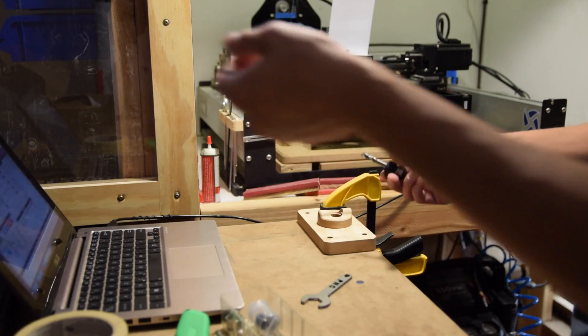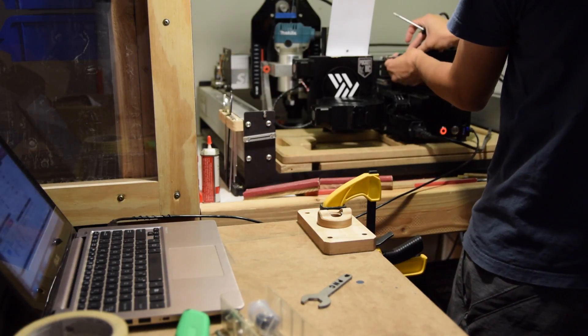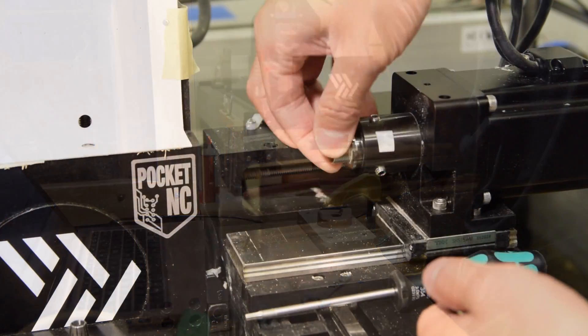That means the exact information about an end mill and its length offset can be physically preserved between tool changes, saving you from having to probe your z-axis every time. But by default,